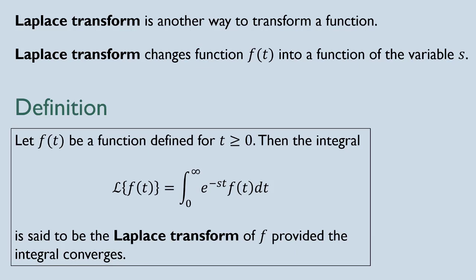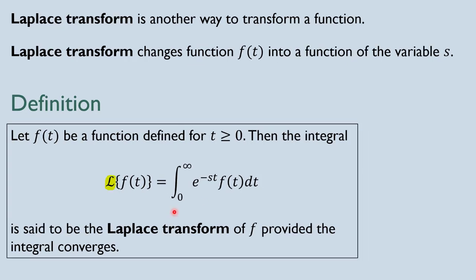Here is its definition. The notation that we use for Laplace transform is this fancy letter L. Laplace transform of a function f of t — this is how it's defined. So Laplace transform is an improper integral of the following: it's the product of our function f of t and the factor e to the power negative st. That factor is always going to be there when you perform Laplace transform. Also notice that the variable of integration is t, which is the same as the variable of our function. But we have another variable — variable s. And as we're integrating in terms of t, it means that we treat variable s as the constant.